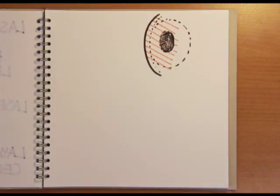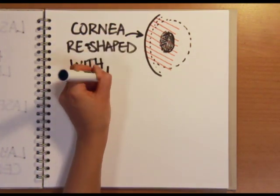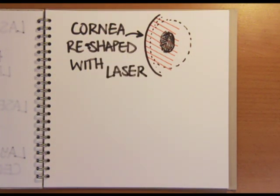The surgeon then uses a computer controlled laser to carry out the operation burning away small amounts of tissue to reshape the surface of the cornea and thereby altering where it focuses the image. The reshaping can take anywhere from a few seconds to up to a minute depending on how much correction is needed.